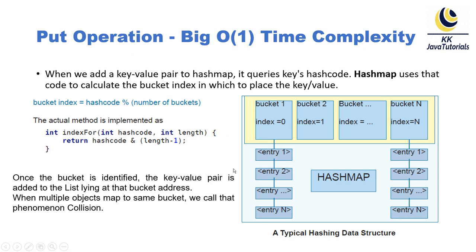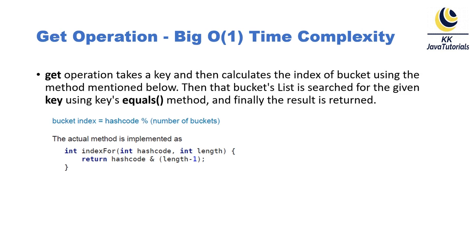Once the bucket is decided, the key-value pair is added into the underlying linked list object. For the get operation, the time complexity is O(1) if there is no collision. The get() operation takes a key object, calculates the bucket index using the same index method, searches that bucket's linked list for the given key using the key's equals() method, and finally returns the result.